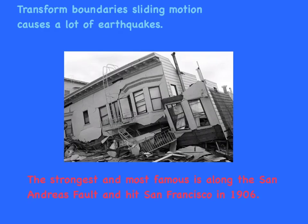Transform boundaries' sliding motion causes a lot of earthquakes. The strongest and most famous is along the San Andreas Fault, and hit San Francisco in 1906.